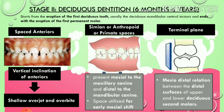Moving on to Stage 2, the deciduous dentition, from 6 months to 6 years. It starts from the eruption of the first deciduous teeth — usually the deciduous mandibular central incisors — and ends with the eruption of the first permanent molar. Features include vertical inclination of the anteriors: unlike permanent incisors which are slightly labially inclined, deciduous anteriors are vertically inclined, resulting in shallow overjet and overbite, with spacing present in the anterior teeth.